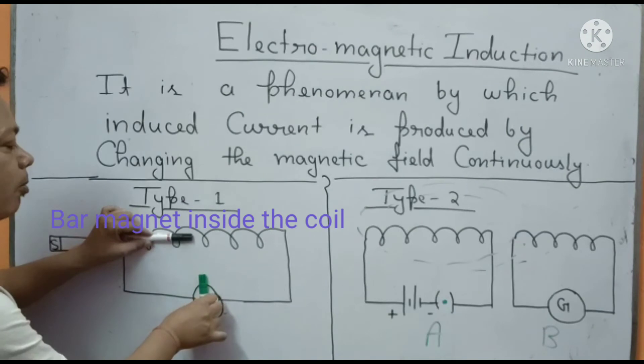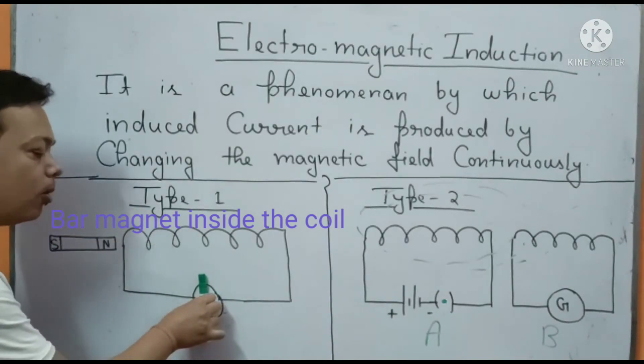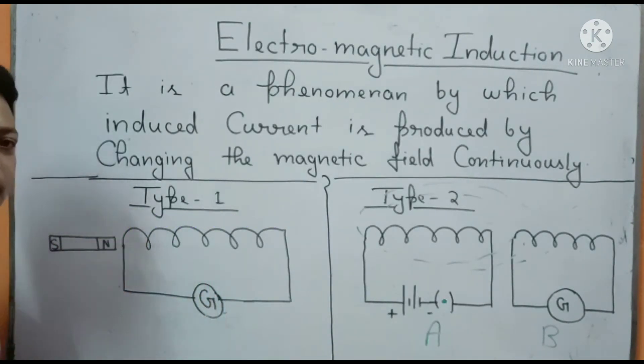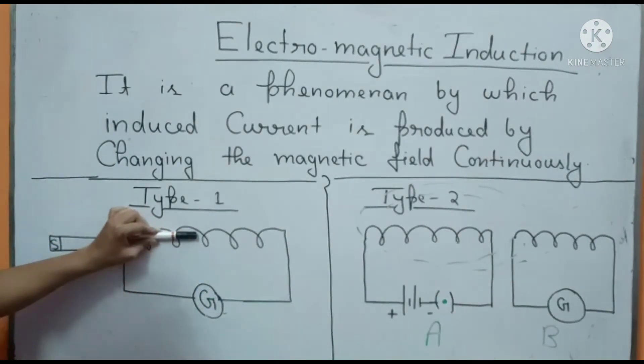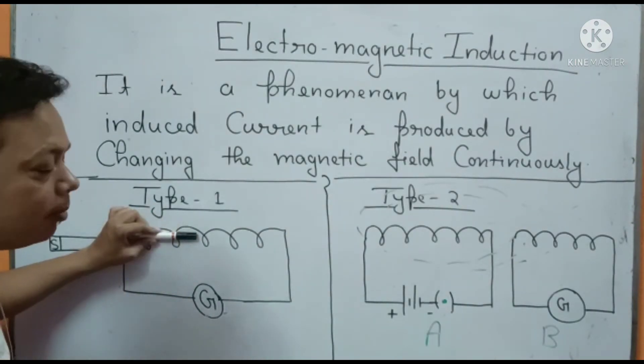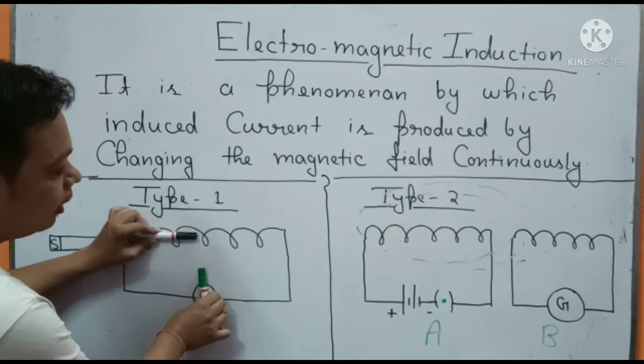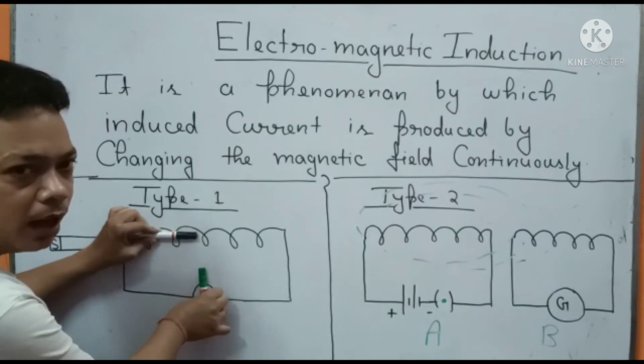The galvanometer needle will not deflect because you kept the magnet stationary. There was no change in magnetic field, so the galvanometer needle will not deflect.